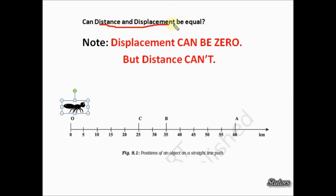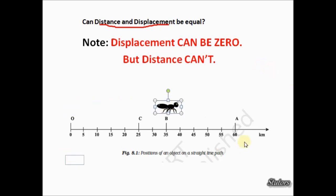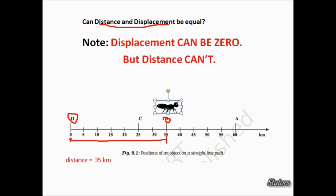Can distance and displacement be equal? It can. Imagine the ant starts from O and stops at B. The distance here is 35 kilometers, and the displacement — that is, the distance of the final position from the initial position — is also 35 kilometers. So the displacement is again 35. Hence, distance and displacement can be equal.